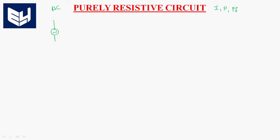So this is an AC voltage source to which a resistive network is connected — a pure resistor, simply a resistor is connected like this. The alternating nature of the source is represented as V = Vm sin ωt. So Vm sin ωt is a voltage wave; it is a sine wave.